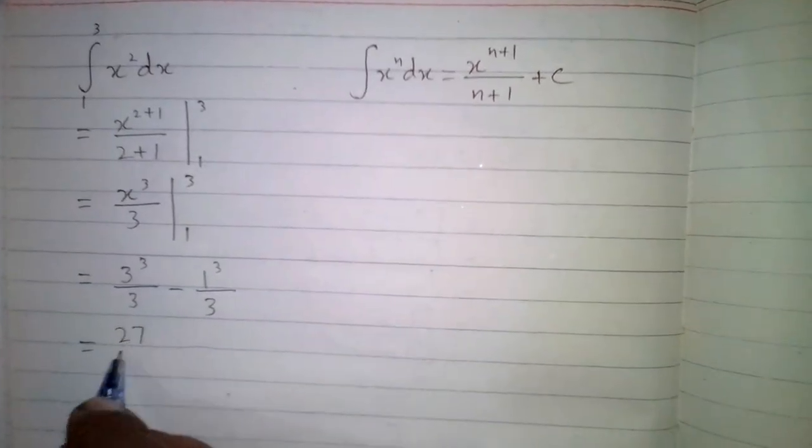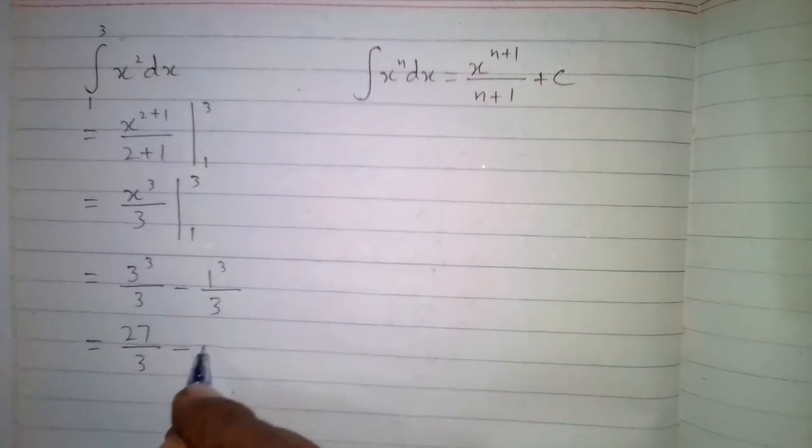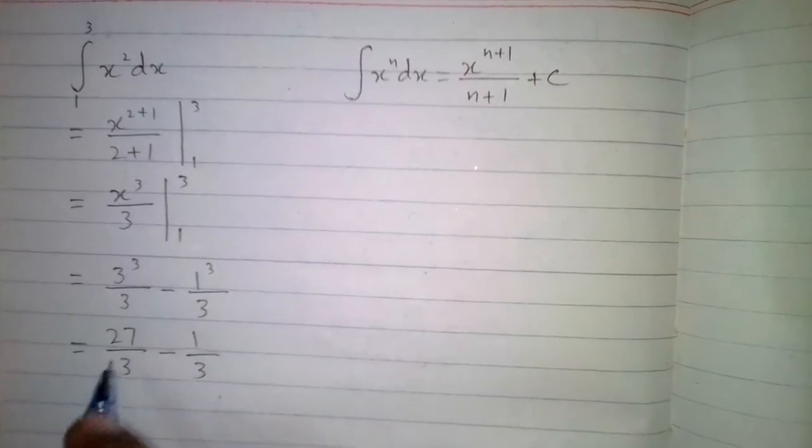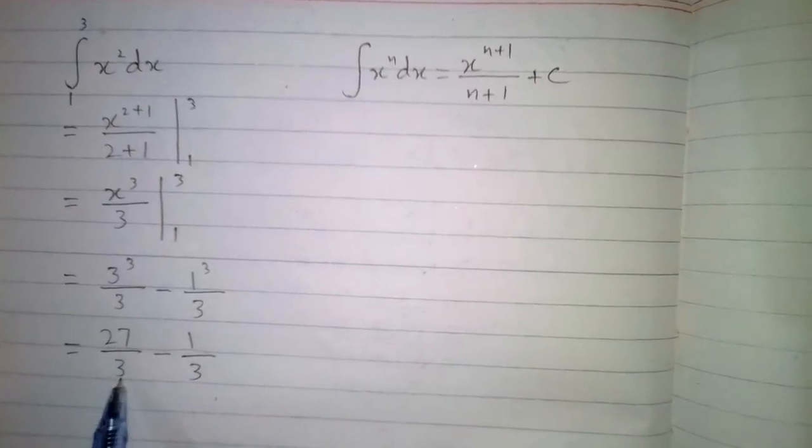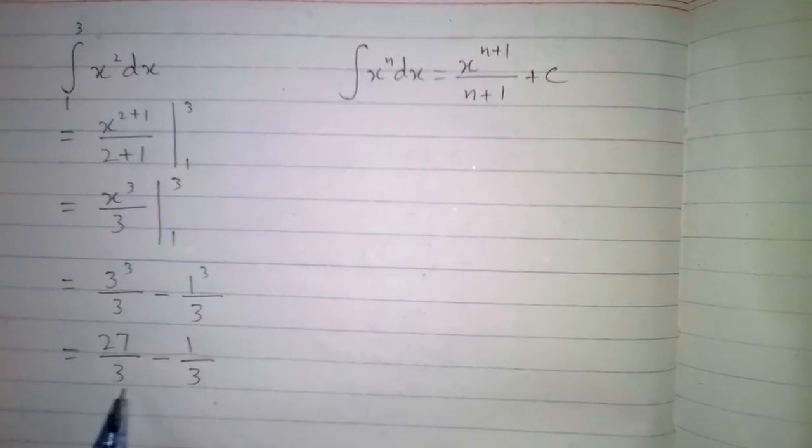So 3 cube is 27, so we have 27 upon 3 minus, and cube of 1 is 1, so we have 1 upon 3. Now we have 27 upon 3 minus 1 which is 26 upon 3. Because the denominators are same, we can subtract the numerators, so we have 27 minus 1 which is 26 upon 3.